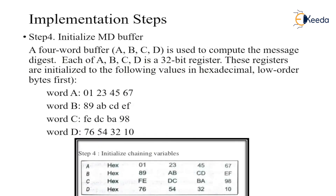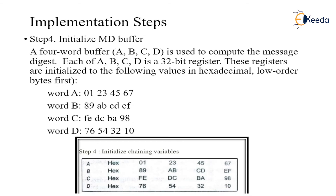Step 4 is initializing the buffers. A four-word buffer A, B, C, D is used to compute the message digest. Each of A, B, C, D is a 32-bit register. These registers are initialized to the following hexadecimal values: Word A is initialized to 01 23 45 67, and Word B buffer to 89 AB CD. These are the fixed hexadecimal values for the four-word buffer.